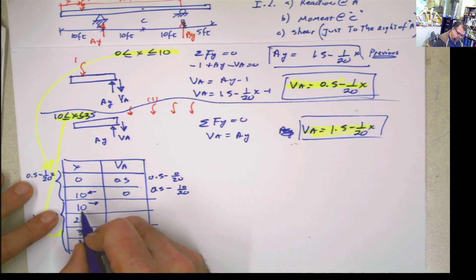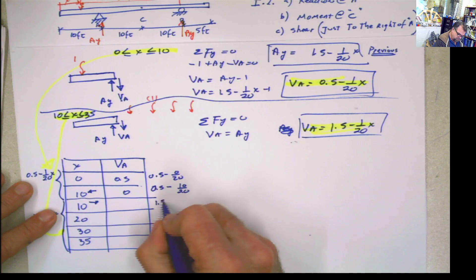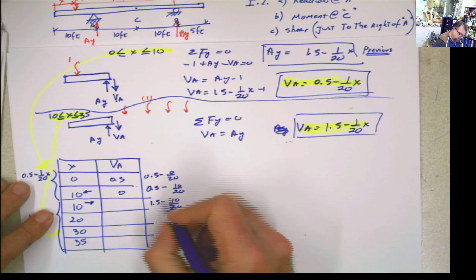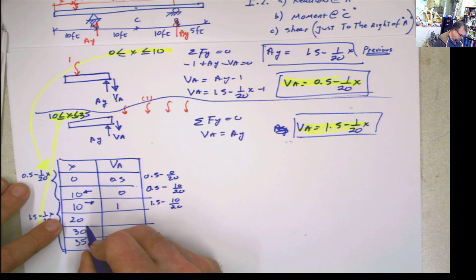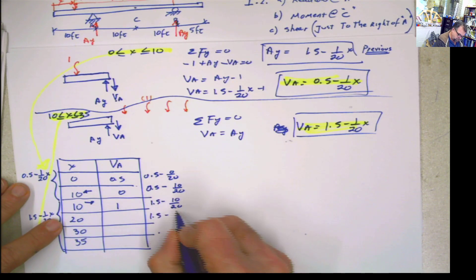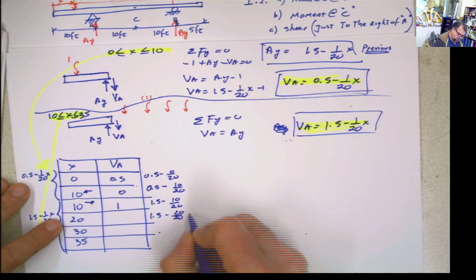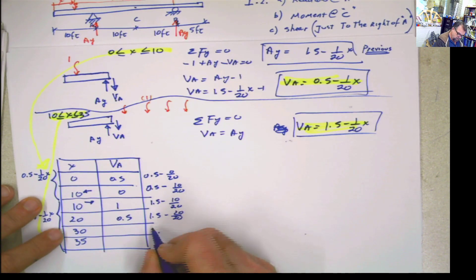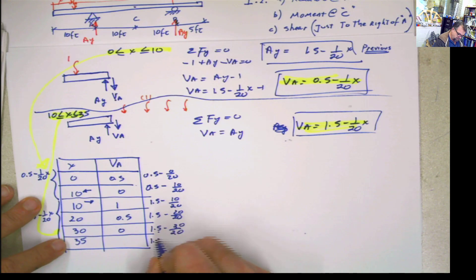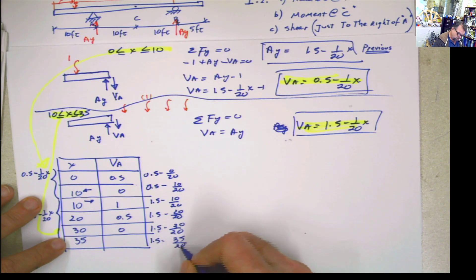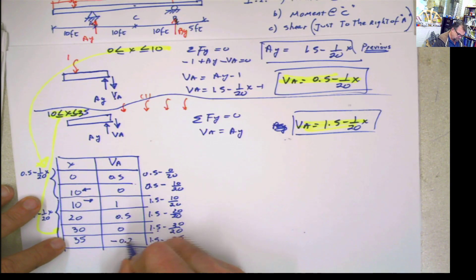Now with this 10, now I use this one. 1.5 minus 10 over 20, this is a 1. Now I move here, I move here, I move here. 20: 1.5 minus 20 over 20, what is that? 0.5. And 1.5 minus 30 over 20, that's 1.5 minus 1.5 equals 0. 1.5 minus 35 over 20, and that's 1.5 minus 1.75, which is negative 0.25.